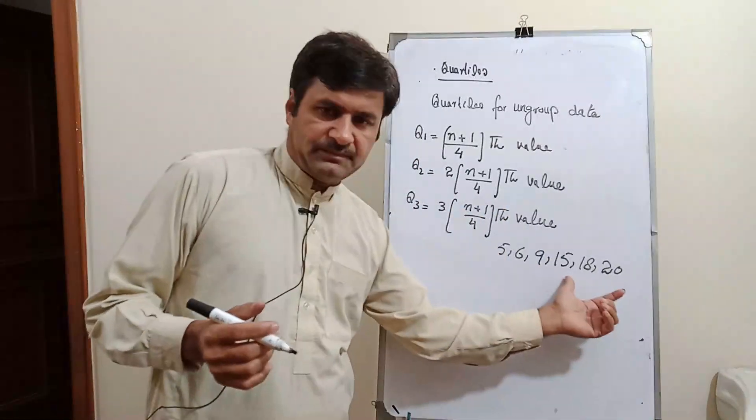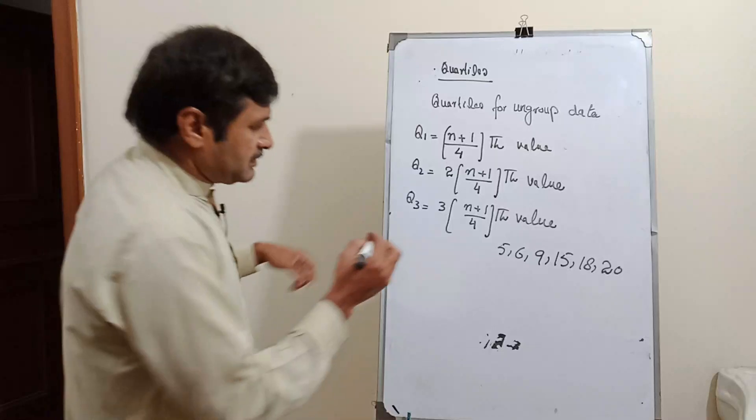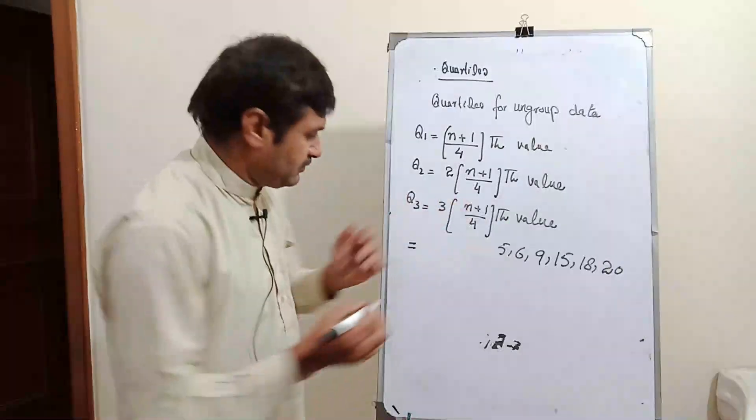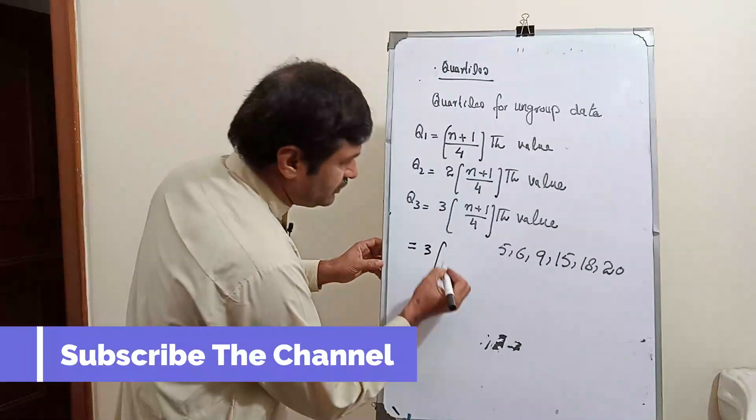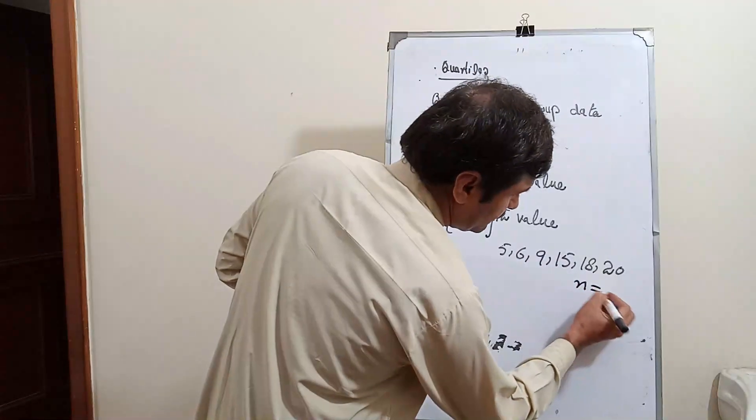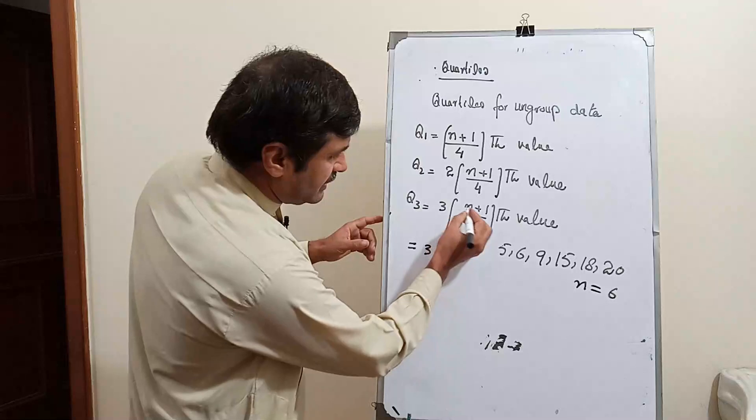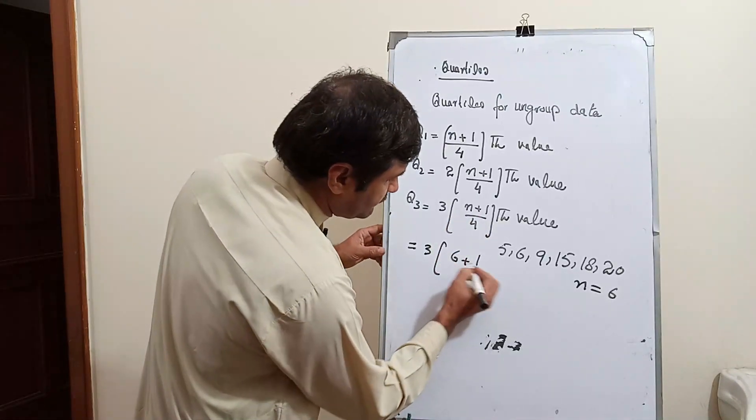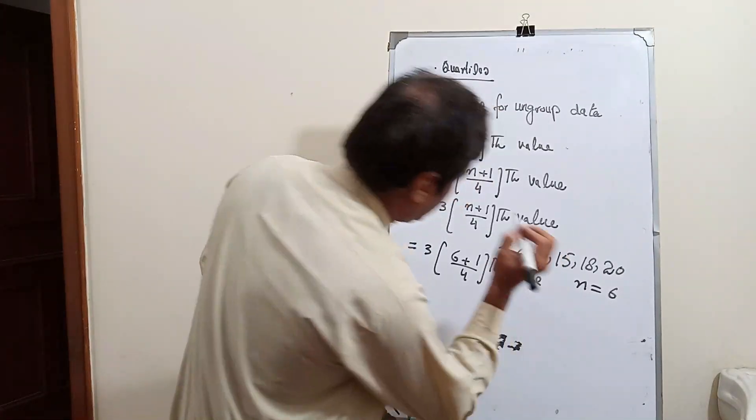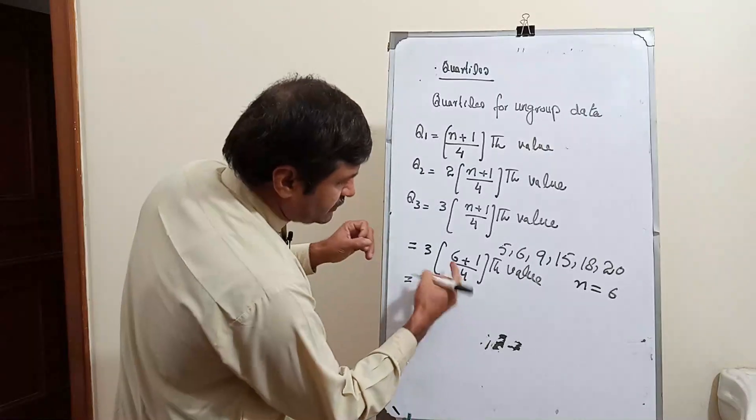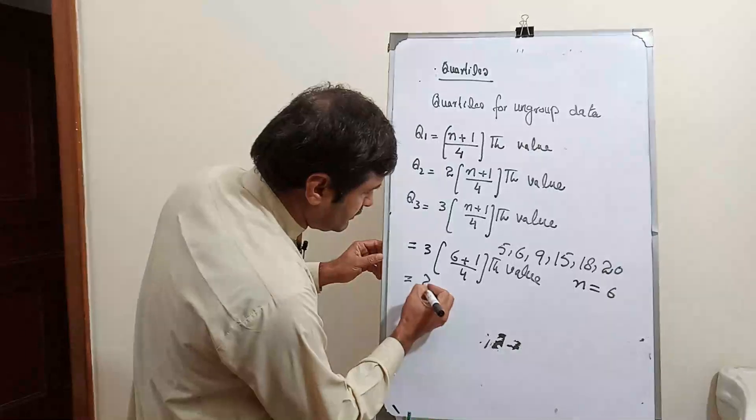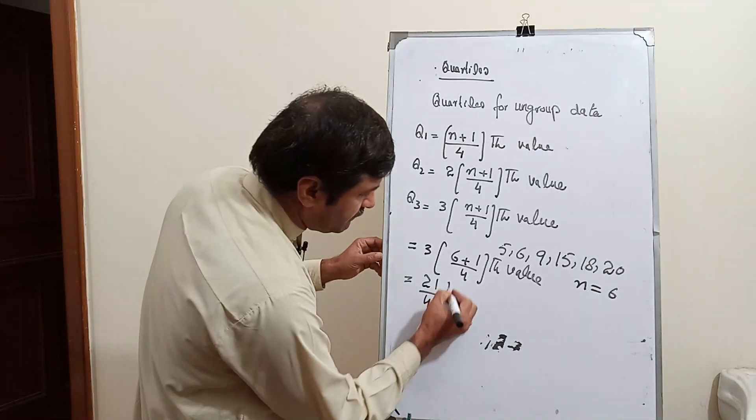The formula of q3 is equal to 3(n+1)/4th value. We have n equal to 6. So 3 into 6 plus 1 over 4th value equals 3 into 7, which is 21, so 21 over 4th value.